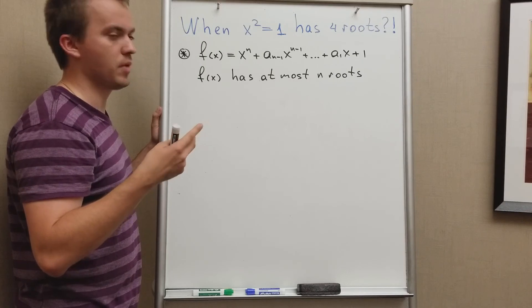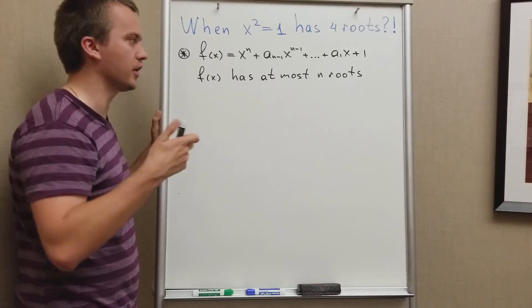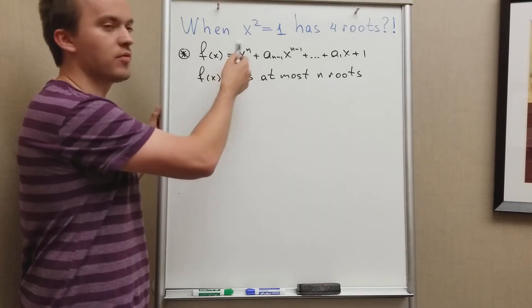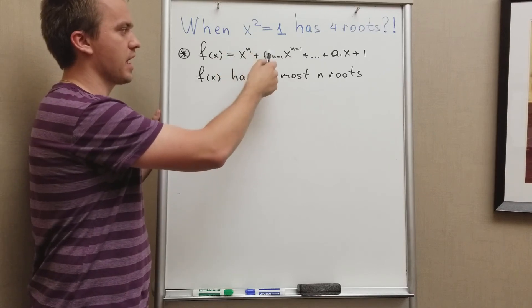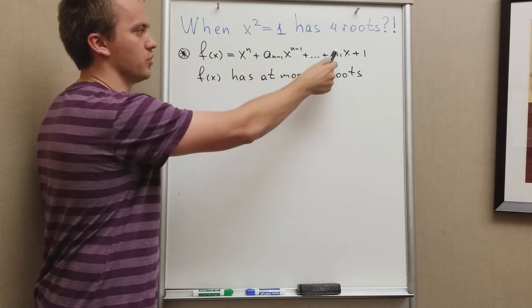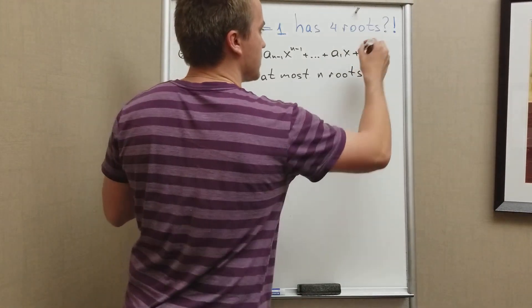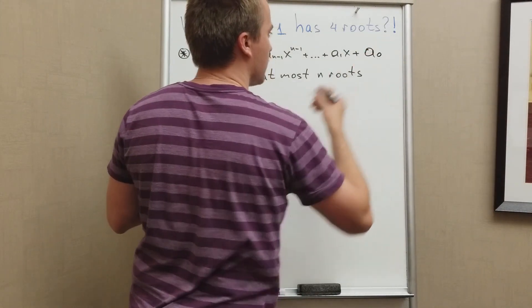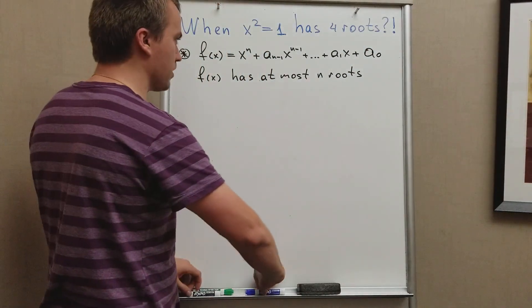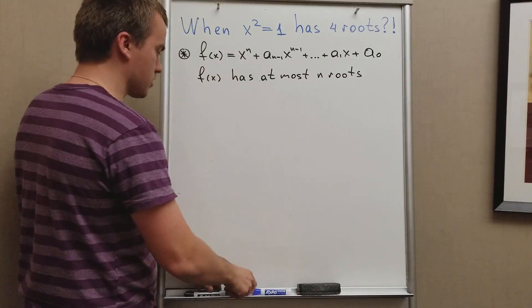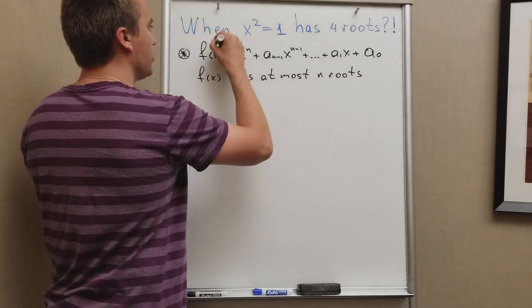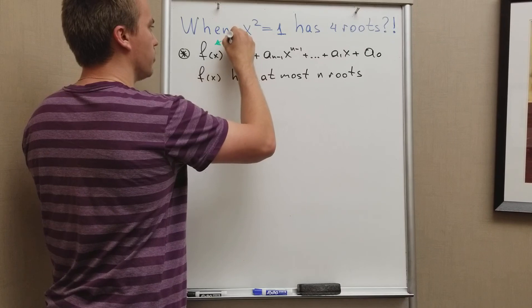Because you maybe know from your middle school, high school, from college that if you have polynomial f(x) = x^n + a_{n-1}x^{n-1} + ... + a_1x + a_0, this polynomial when leading coefficient is one is called a monic polynomial.